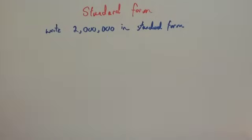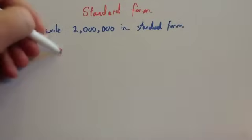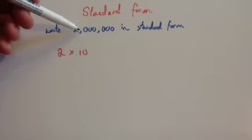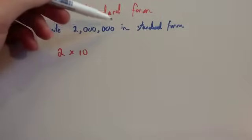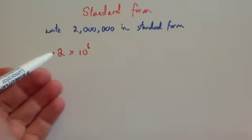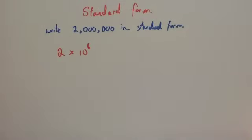This time, we've been asked to write 2 million in standard form. Remember, we need a number between 1 and 10 at the front, so we're going to use 2 to begin with. We're going to times it by 10 to the power of — you want to get 1, 2, 3, 4, 5, 6 zeros on there. So you're going to times it by 10 to the power of 6. Remember, if you times a whole number by 10 squared, you'd be adding 2 zeros on the end. So here, you're multiplying 2 by 10 to the power of 6, and you'd add 6 zeros to the end.